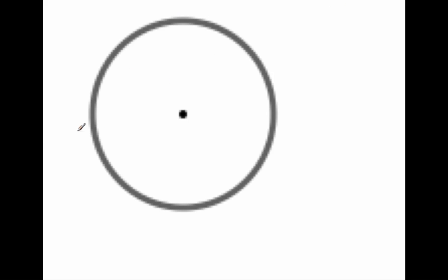Next, we deal with two points on the circle. If I have a point here on the circle and a point right here — two points on a circle and the part of the circle in between those two points — we call that the arc. Typically you might see points on the circle labeled, so this would be called arc MN. An arc is only the two points on the circle and the part of the circle that is between those two points.